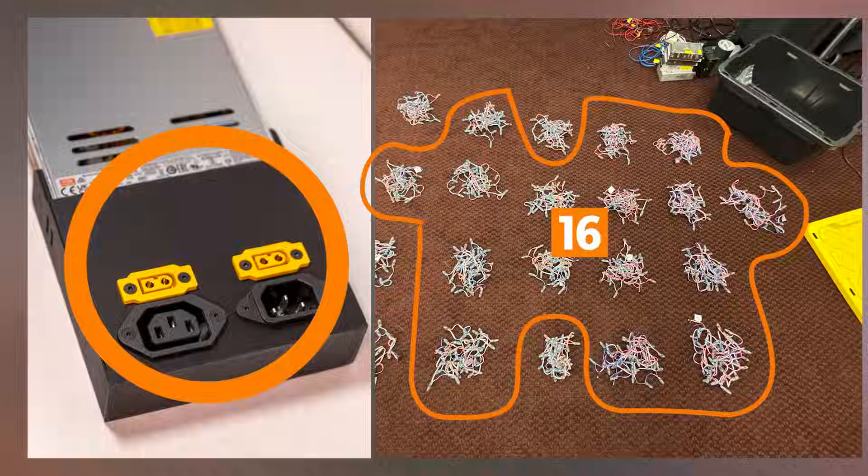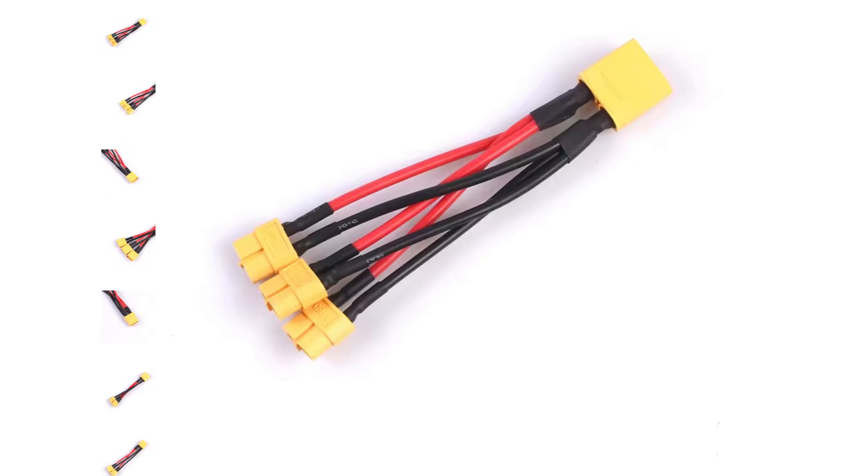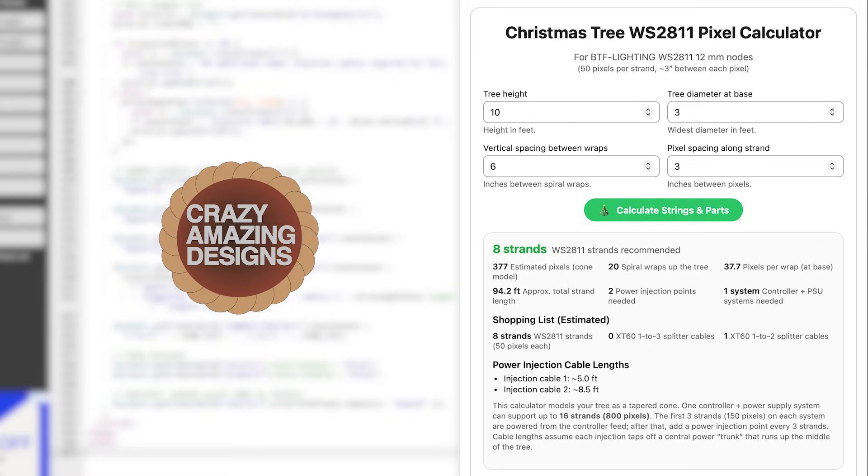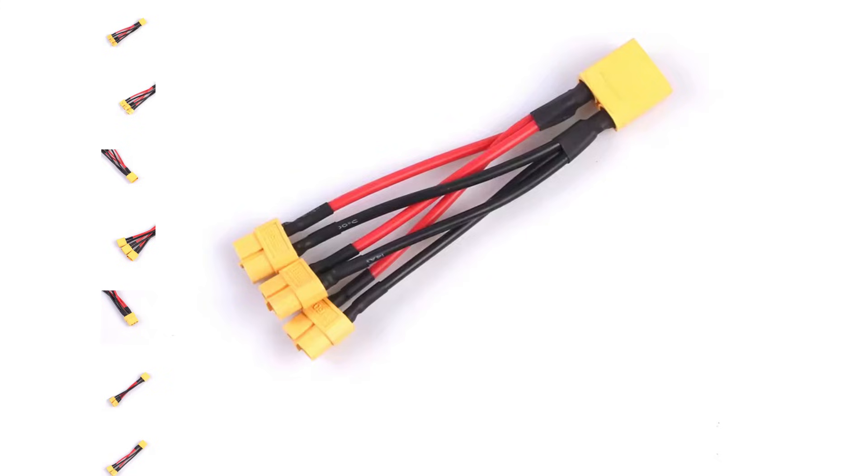This means you will need to use splitters to get the additional connectors at the power supply. I created this tree pixel calculator that you can find on the product page at crazyamazingdesigns.com. Give it the tree height and diameter at the base. Then it shows you exactly how many LED strings your specific tree will need, how many power injection points you will need, and what adapters you need to power them. Connect the adapters and run the cables down the trunk of the tree to the power supply. The calculator suggests these add-ons and the wire length you'll need based on your tree size, as well as how many ports you're going to need at the power supply.